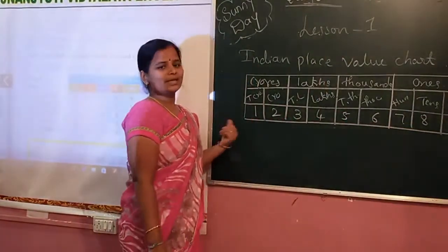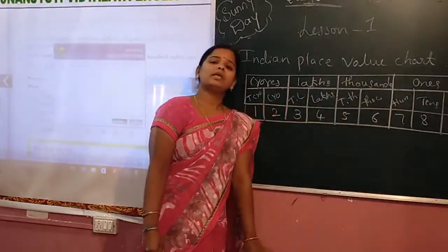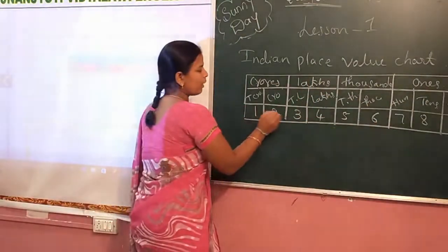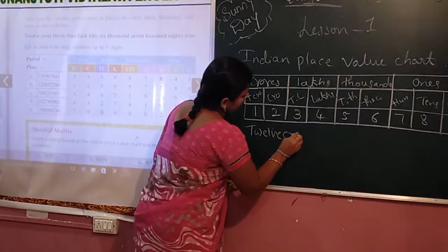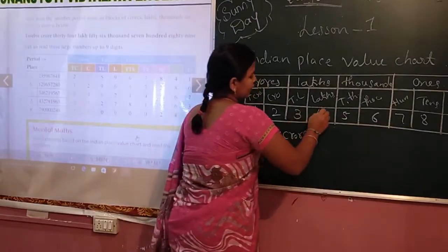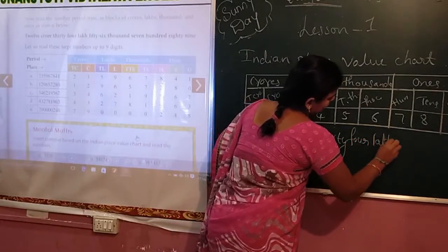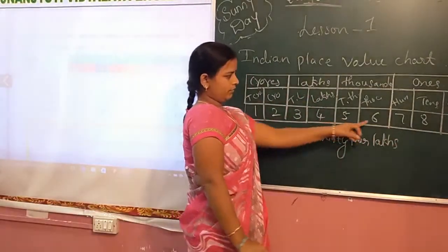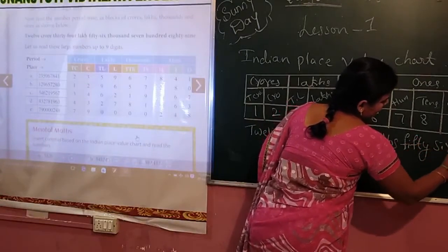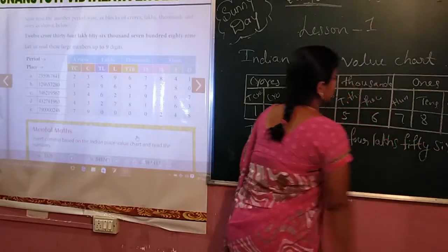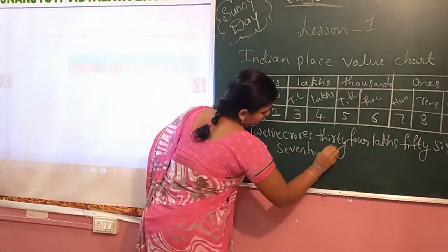Now, how to read a number using this chart? Observe the chart and read. Insert the comma. For example: 1, 2 — that is 12 crores. 3, 4 — that is 34 lakhs. And 56,089.